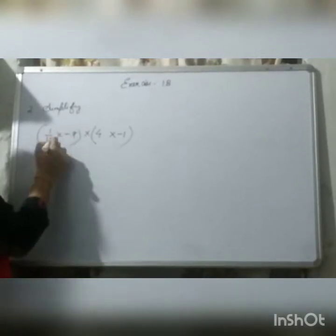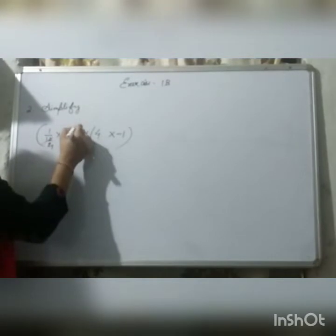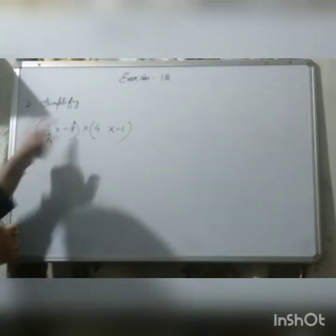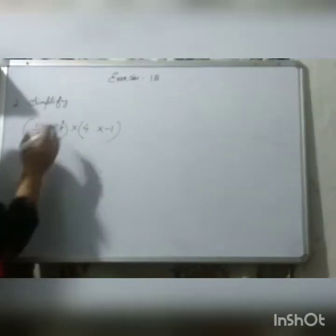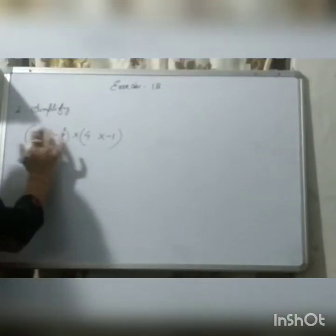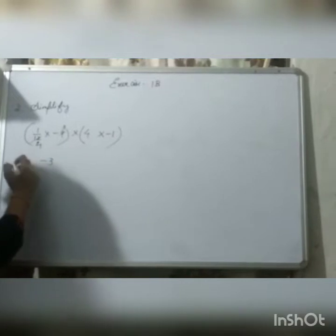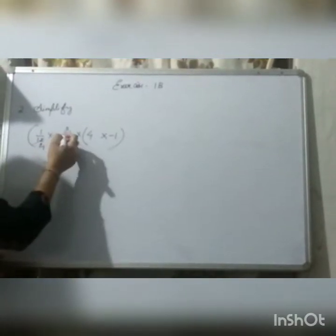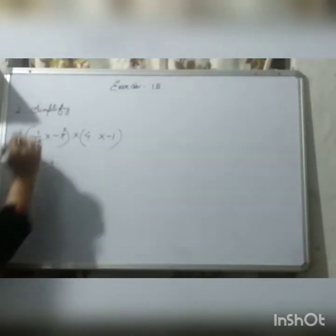So, we can divide by 3. 3 fours are 12 and 3 threes are 9. Now, again, this 3 and 4 will not cancel each other, so we will leave as it is. So, we will multiply. 1 into minus 3, minus 3. Because in place of 9, 3 is there, so 3 will get a minus sign.